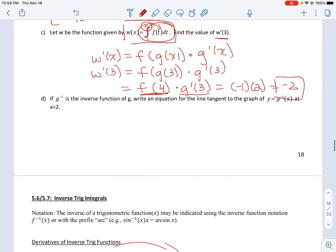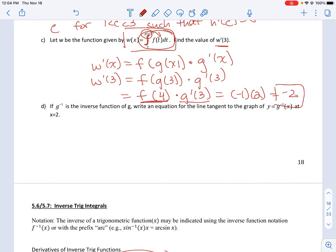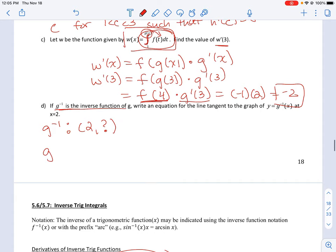The last one is our inverse question. g to the negative 1 is the inverse function of g. I want to find the equation of the line at x equals 2. On the inverse, we need to find 2 comma some number. But on g, this is the same as finding where g equals 2. Looking back at the table, the x coordinate that gives you a g value of 2 is 1. So this is 1.